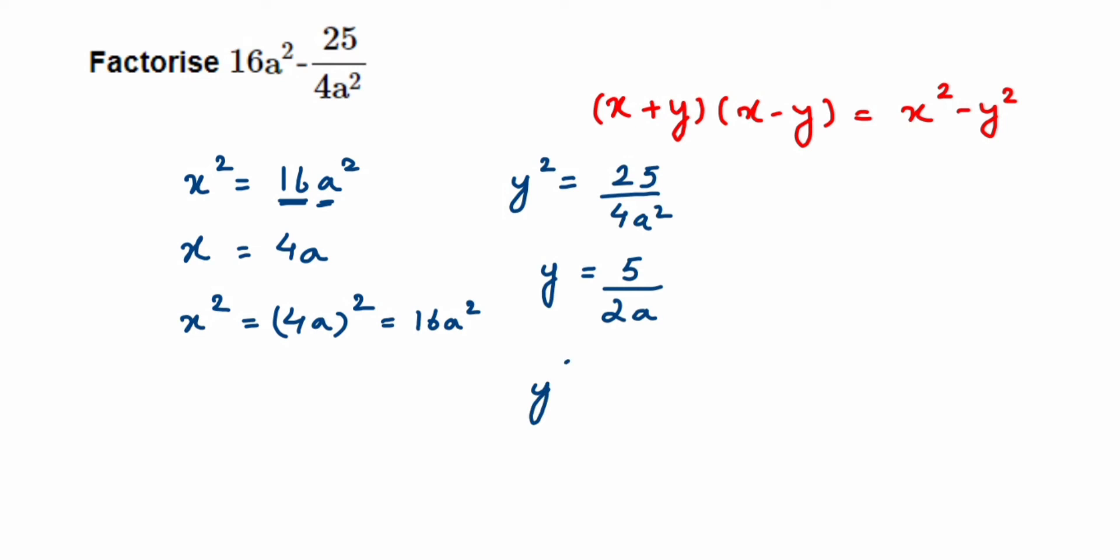2a square is 4a². You can cross-check your answer like that. Now we're going to substitute in the identity.